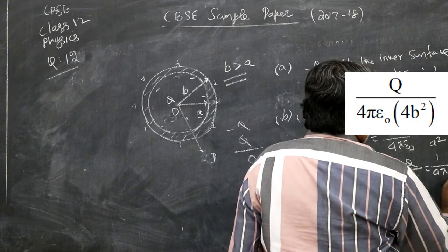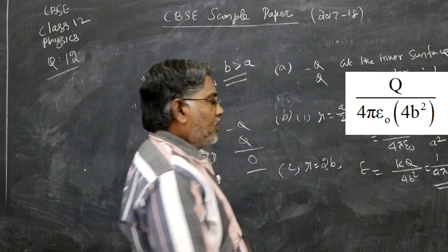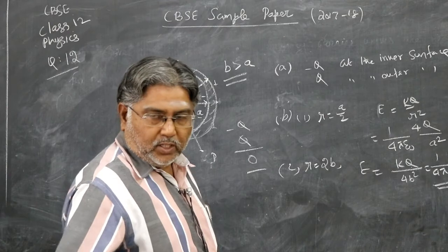So 1 by 4 pi epsilon naught Q by 4B squared. Q by 4 pi epsilon naught 4B squared. 4 pi epsilon naught 4B squared in the denominator.